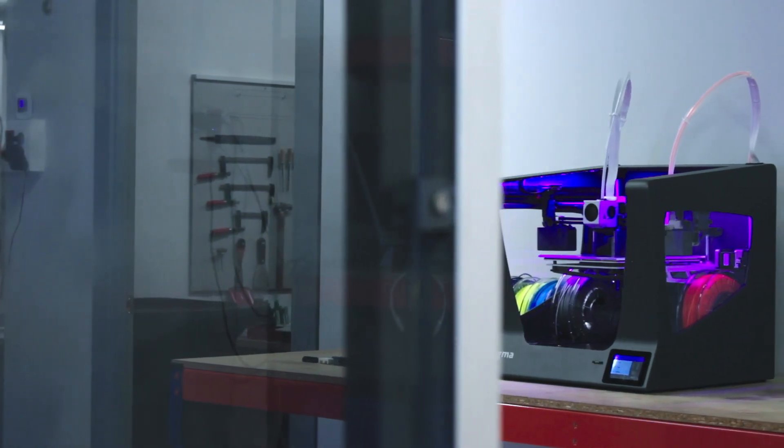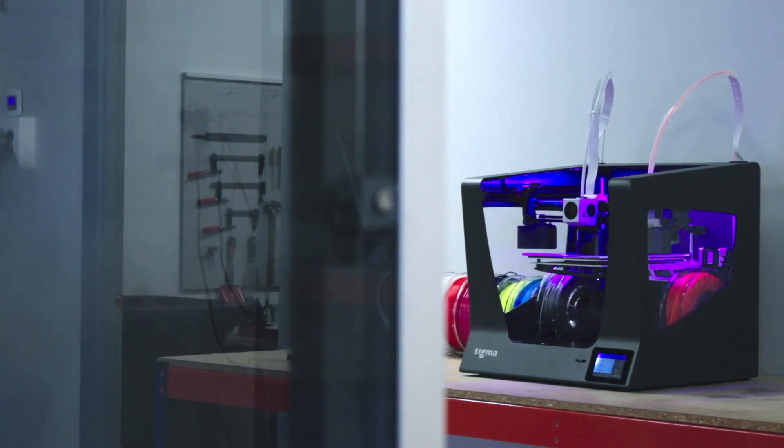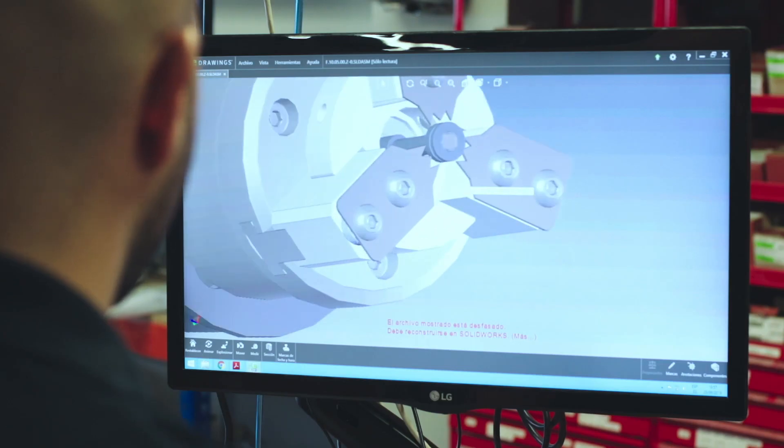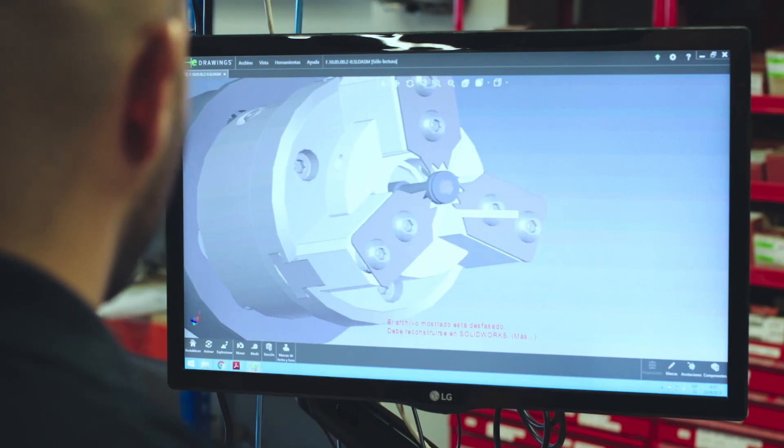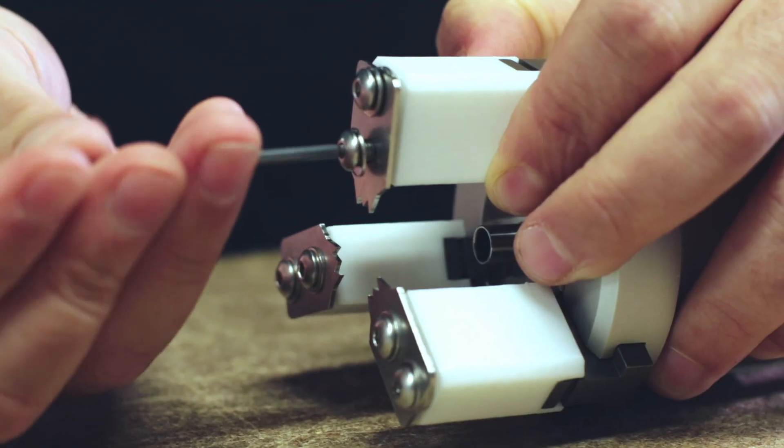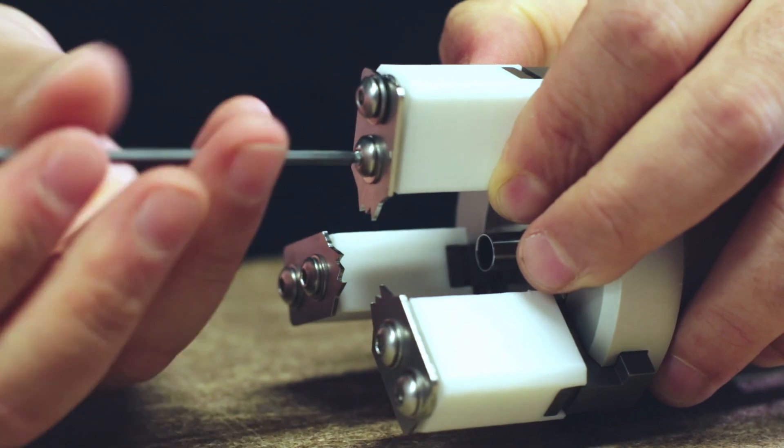We 3D print this part as it is and we test it. Then we enter an iteration process where we maintain the original specifications and we give slight modifications so that the part fulfills all the mechanical requirements.